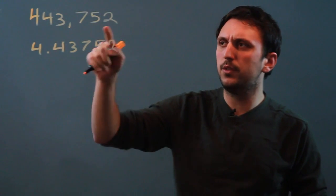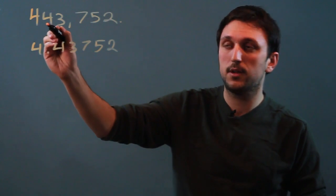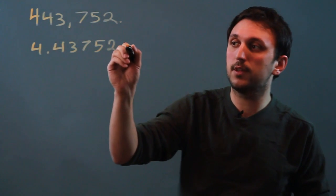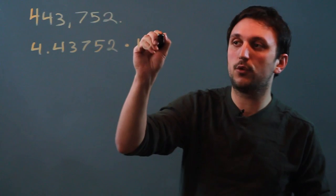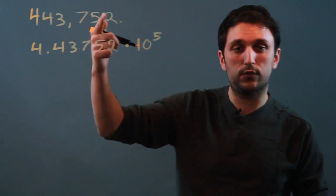Now, we've moved the decimal all the way from here 1, 2, 3, 4, 5 places, meaning we have to say times 10 to the fifth. So, that's an example of a normal number, and this is just a real number.